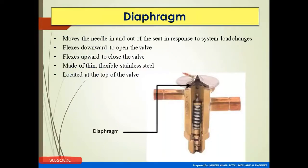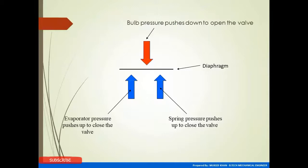The diaphragm moves the needle in and out of the seat in response to system load changes. These springs act as closing and opening mechanisms for the refrigerant. The bulb pressure pushes down on the diaphragm, while the spring and spring isolator push up to close the valve. Evaporator pressure also pushes to close the valve.